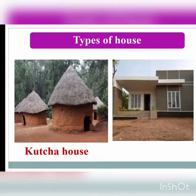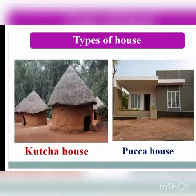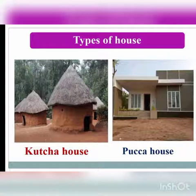What about the next picture? Yes, this is a Pakka house. A Pakka house is made of bricks, cement, iron bars, etc. They are mostly found in cities. They take much time and are costlier to build, but this type of house is very strong.